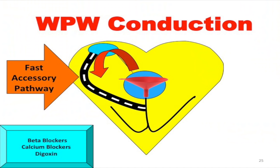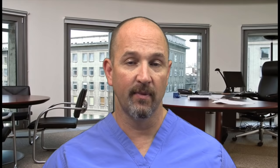Wolf-Parkinson-White: the black line represents a super-fast accessory pathway that impulses want to travel down. If you use a funnel drug — a negative chronotrope like a beta blocker, calcium channel blocker, or digoxin — on a patient with WPW, their heart rate will actually go faster because more impulses will travel down that accessory pathway.